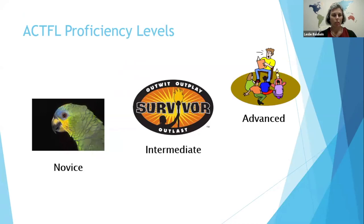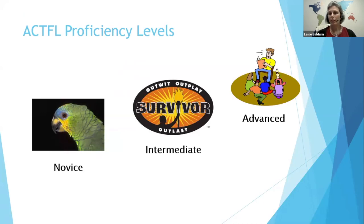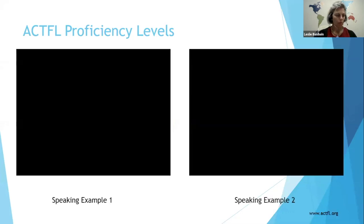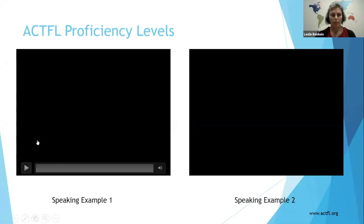If you're a visual learner, you can think about the levels this way: a novice learner is a parrot — lots of repeating and memorizing. An intermediate language learner is a survivor — they can get along and manage in situations where unexpected issues come up, though not in a completely fluid way. And the advanced language learner is more of a storyteller or a reporter — their speech and writing is very fluid, they're comfortable across a wide range of topics, and can narrate and describe in multiple time frames. We're going to look at a couple of examples before we move into more depth.